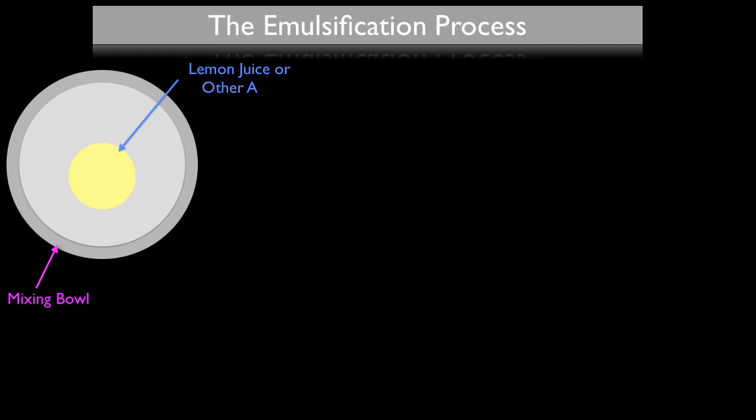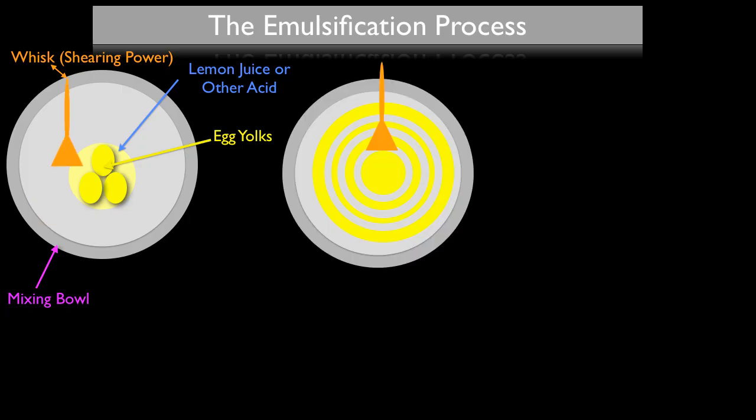Here I just have my normal metal mixing bowl, and in this example let's walk through the basic steps of making a mayonnaise. To this metal mixing bowl I'm going to classically add lemon juice — but this could technically be any sort of vinegar or acid that you like — and then I'm also going to add egg yolks. Because I'm using a metal mixing bowl, the most logical application of shearing force would be a whisk. I'm going to whisk the egg yolks and lemon juice together, and the yolks and the acid are going to be my continuous phase.